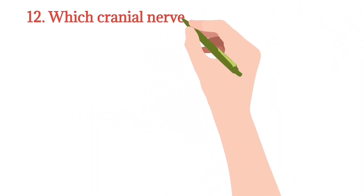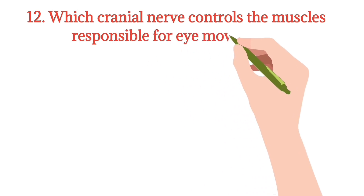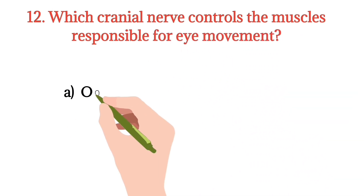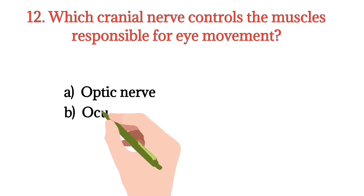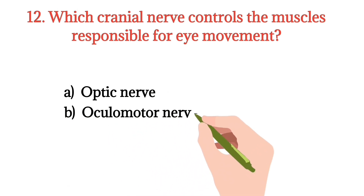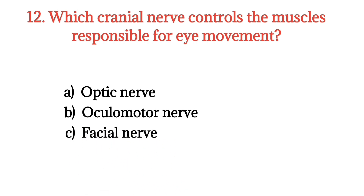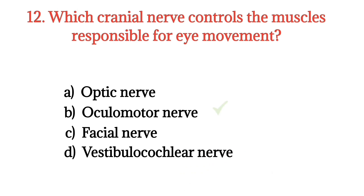MCQ number 12. Which cranial nerve controls the muscles responsible for eye movement? Option A: Optic nerve. Option B: Oculomotor nerve. Option C: Parietal nerve. Option D: Vestibulocochlear nerve. The right option is Option B.